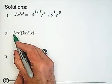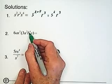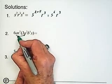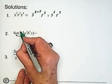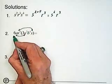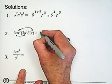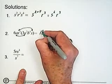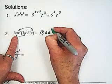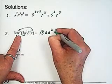In this question, we have 6ax to the 5 times 3a squared b to the 4th x. We can combine our a powers and our x's. We also can combine our 6 and our 3. So 6 times 3 is 18. I'm just going to write these out. So we have a times a squared.